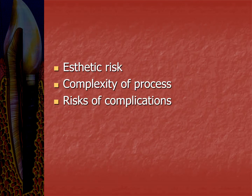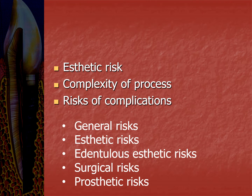The SAC classification objectively classifies a patient's rehabilitation with dental implants into three groups — straightforward, advanced, or complex — from both surgical and prosthetic perspectives. In the 2009 version, the main determinants were aesthetic risk, complexity of the process, and risk of complication. This was later modified with additional risk factors: general risk, aesthetic risk, edentulous aesthetic risk, surgical risk, and prosthetic risk. The updated SAC assessment tool allows users to derive an SAC classification according to their specific case based on these risk factors.